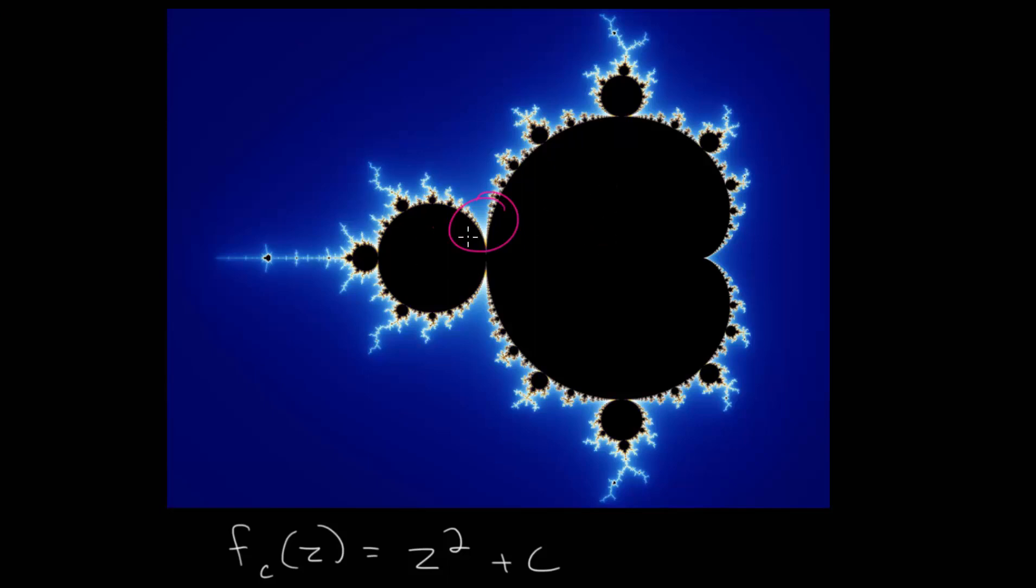So, let's look at an animation where we actually zoom in on this part. And what we'll notice is that this overall picture will show up in some type of variation, but repeatedly. So, we'll see this with some slight differences many different times as we zoom in.